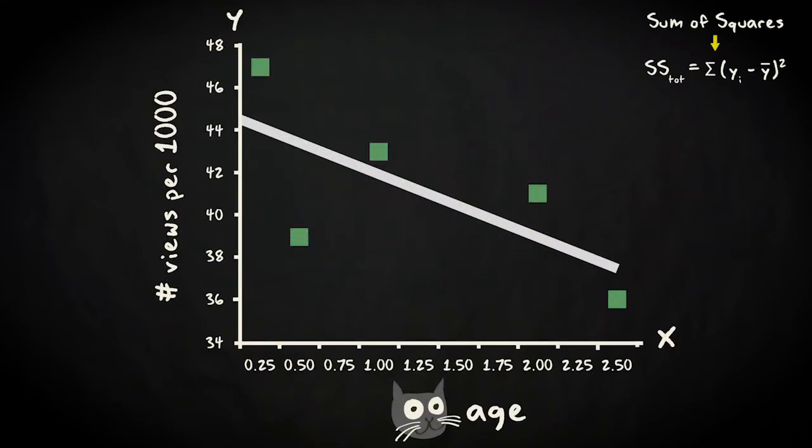So what part of the total variation is explained by our predictor? Well, we already know which part it doesn't explain. That's the error in our model, called the residuals, the variation that we failed to capture. Remember, the residual sum of squares is calculated by adding the square differences between the observations, y sub i, and the predictions, y hat sub i.